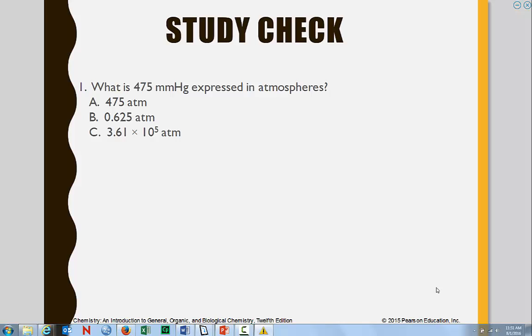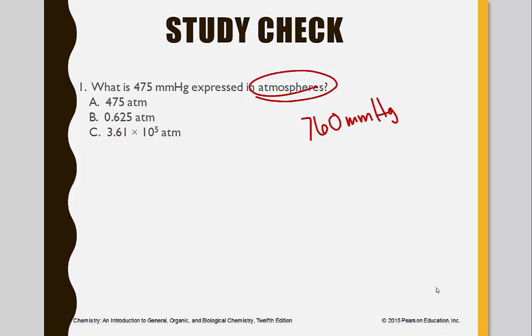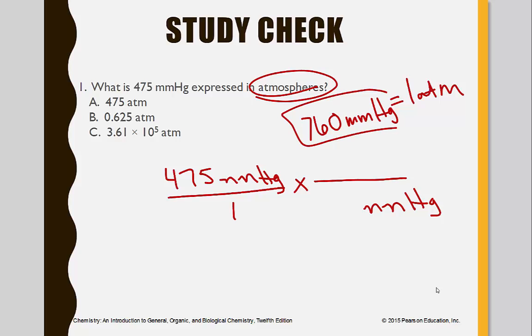So let's do a practice. We have 475 millimeters of mercury. How much of that is in atmospheres? So there are 760 millimeters of mercury in each atmosphere. So we have 475 millimeters of mercury that we're trying to convert. Over 1, we're going to multiply fractions. We have millimeters of mercury on the top, so we're going to put millimeters of mercury on the bottom. So 760 goes with the millimeters of mercury. That is equal to 1 atm. So it's 475 divided by 760. That comes out to be 0.625 atm, which is right here.